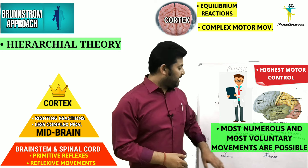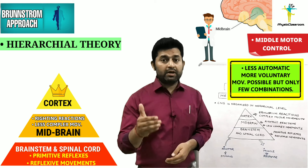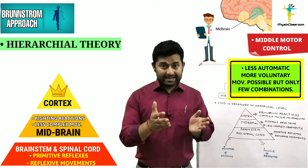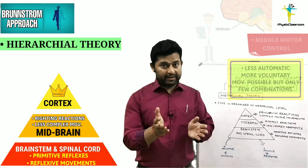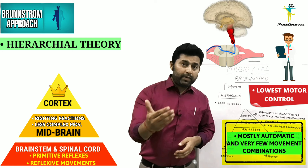Another important point is that complex motor behaviors and movements are processed at the cortical level, allowing us to produce a variety of movements. In the absence of the cortex, the midbrain can produce only less complex movements that are not multiplanar and are more stereotypic in nature — the ability to produce a variety of movements is lost. When only the brainstem and spinal cord act as the motor control center, in the absence of the midbrain and cortex, we can only produce reflexive movements.